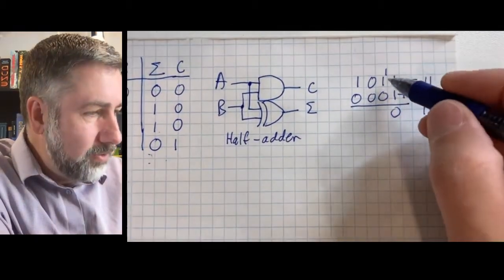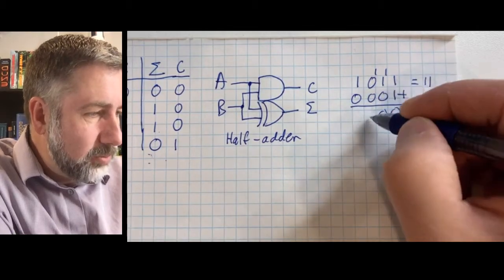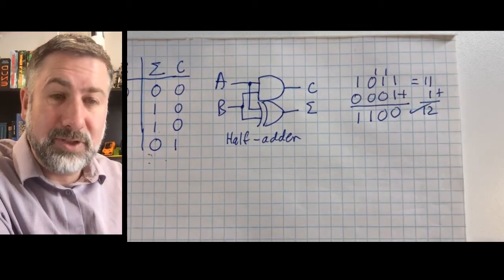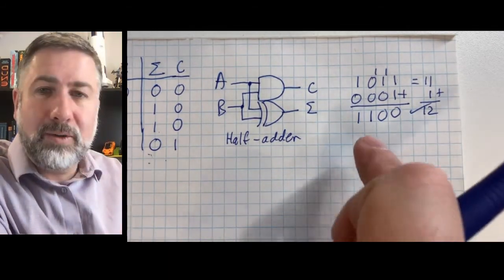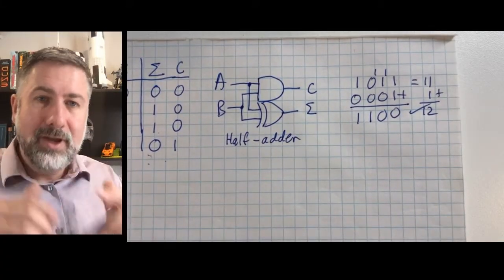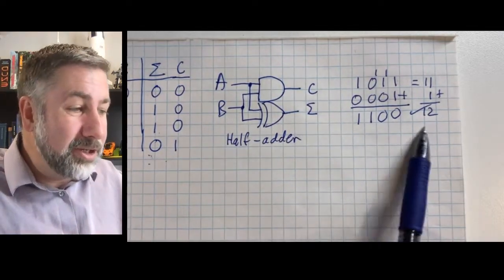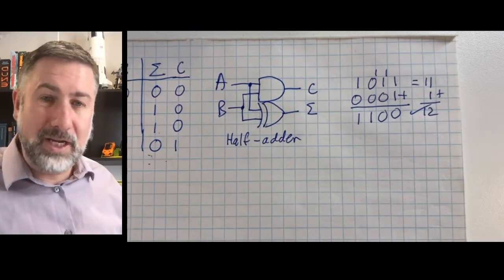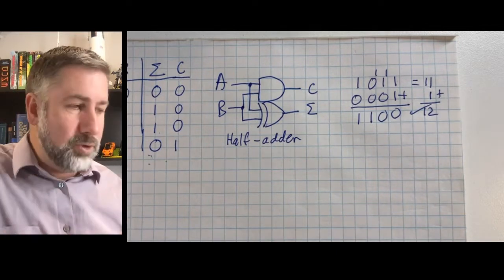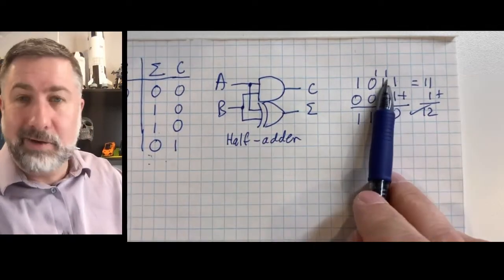Let's finish this math out. One plus one plus zero is zero, carry the one. Zero plus zero plus one is one, no carry. One plus zero is one. And the answer is in fact twelve, as we expect. So this is how we're going to do math in the bigger computer — we're going to have a string of bits, and half adders aren't going to be good enough because we need to deal with carry. We're going to turn this half adder into a full adder — an adder that can deal with carry-in.